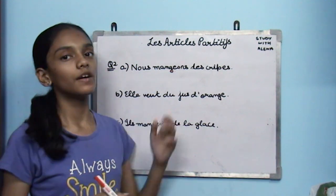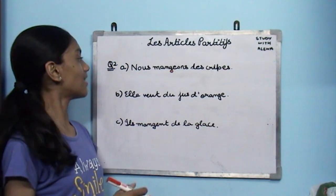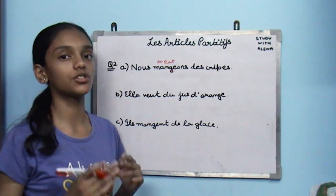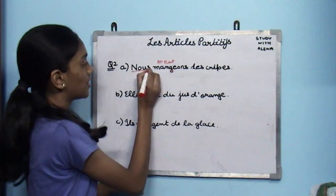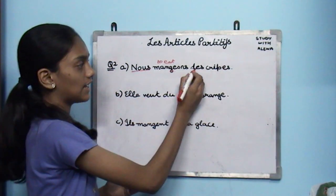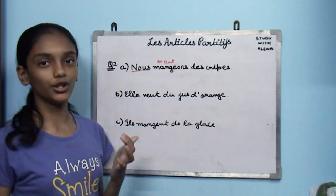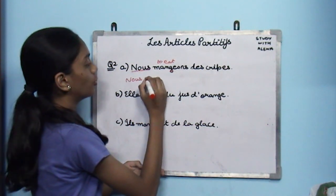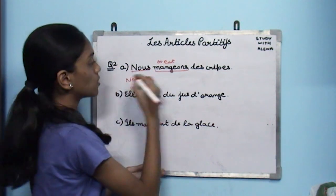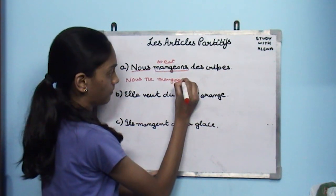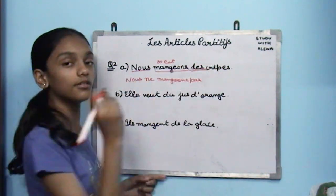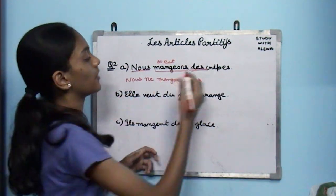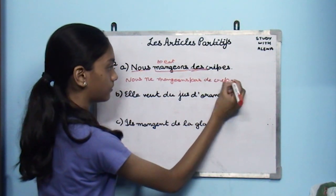Question two: change these sentences into negative form. First: nous mangeons des crêpes. Manger is to eat; crêpe is a French dish like a pancake. Here nous is the pronom sujet, mangeons is the verb, des is the article partitif, and crêpes is the noun. So the negative form is: nous ne mangeons pas de crêpes. The article des changes to de.